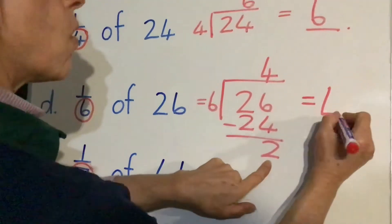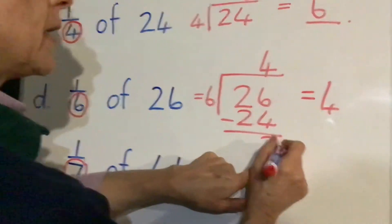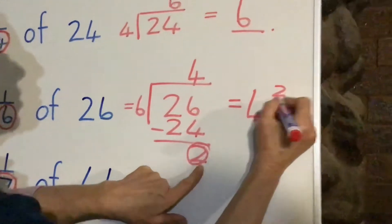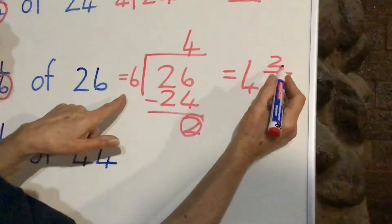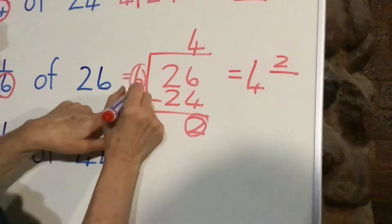This is our answer here, 4, and remember this number here that's left over goes on top of our fraction and this is the denominator, so the numerator and the denominator of our fraction.